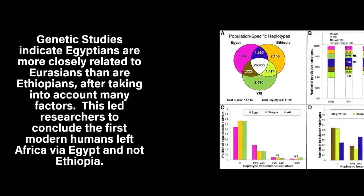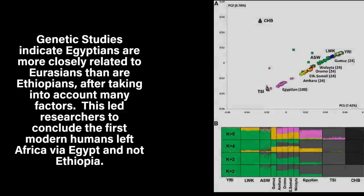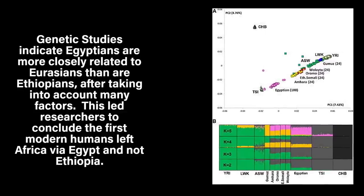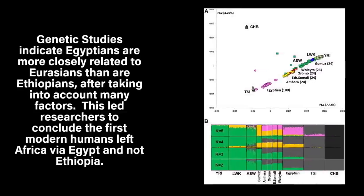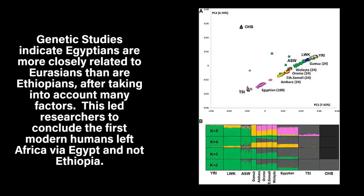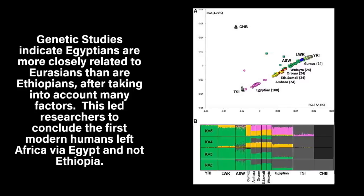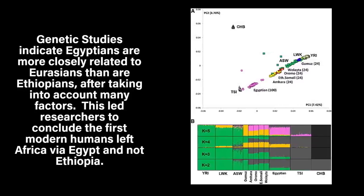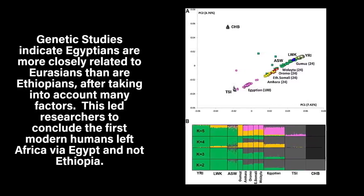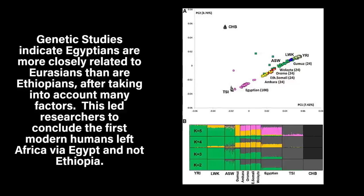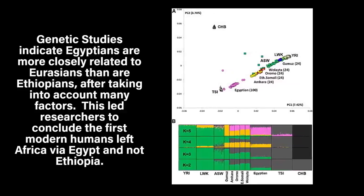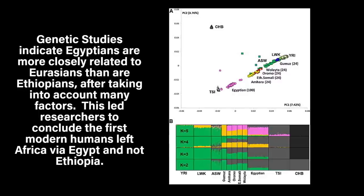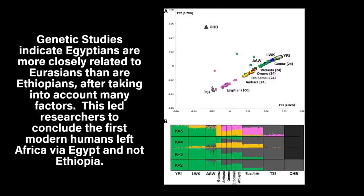Ever since the discovery of the earliest Emeran tools — including points, blades, and scrapers — in a cave close to the Sea of Galilee in Israel, archaeologists have been perplexed as to when this more complex method of toolmaking initially emerged. According to archaeologist Jeff Rose, archaeologists have always focused so much on out of Africa and into the Middle East that we've missed an entire chapter of the human expansion in Arabia.